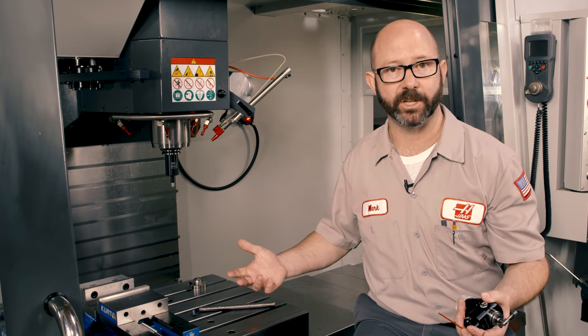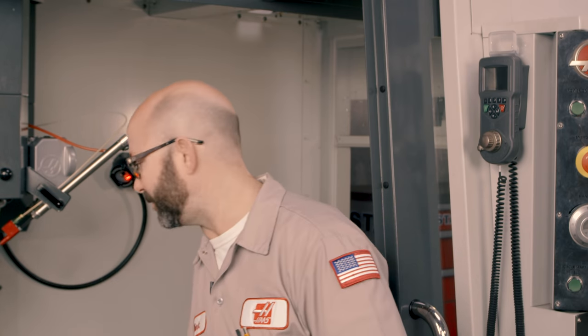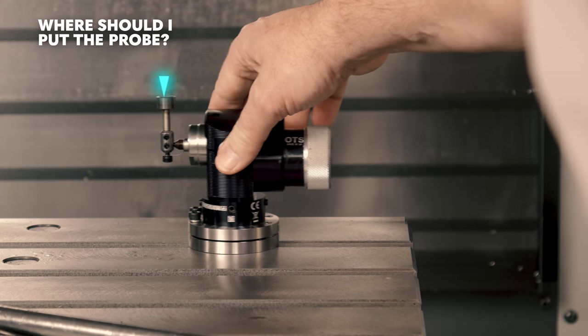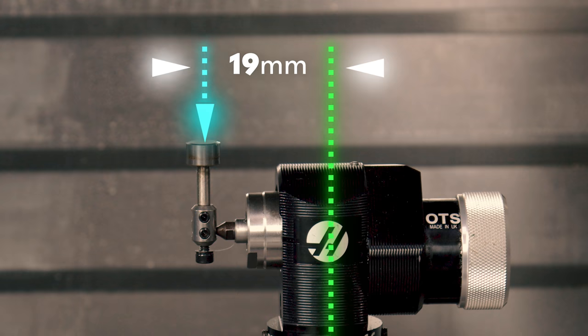But here's a million dollar question. Where should it be? How far can I slide this over? I'll just put this guy back on for a second. The number is 19 millimeters. We need the tip of this probe, rather the center of this probe, 19 millimeters in, or three quarters of an inch, in from the edge of our travel.